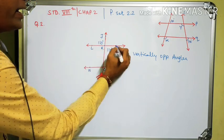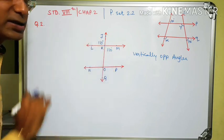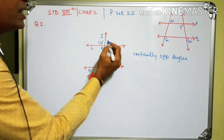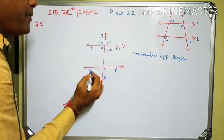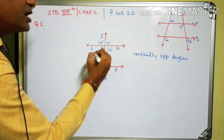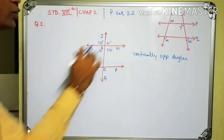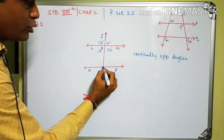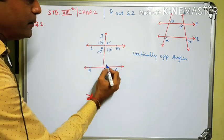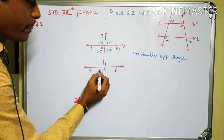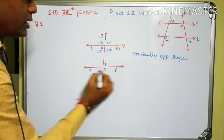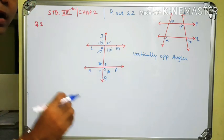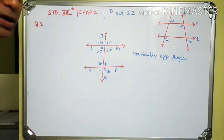Angle JKL and angle MKO are vertically opposite angles. Other pairs include angle JKM and angle LKO — also vertically opposite. Further examples: angle KOP and angle NOQ, and angle KON and angle POQ — all vertically opposite angles. Vertically opposite angles are always congruent, always equal.